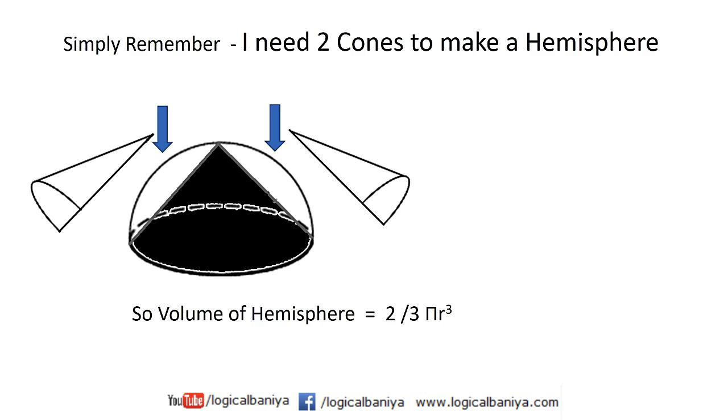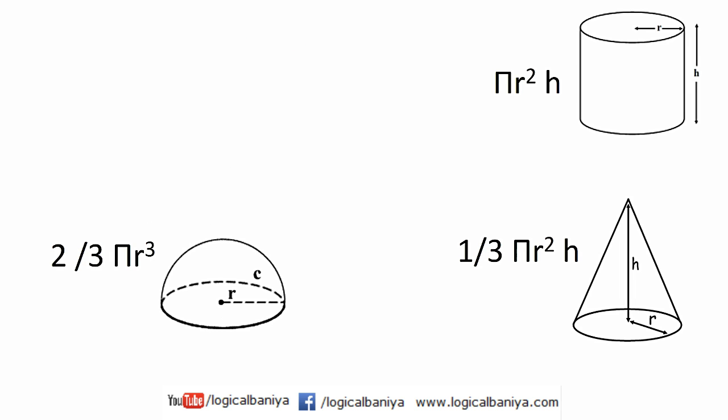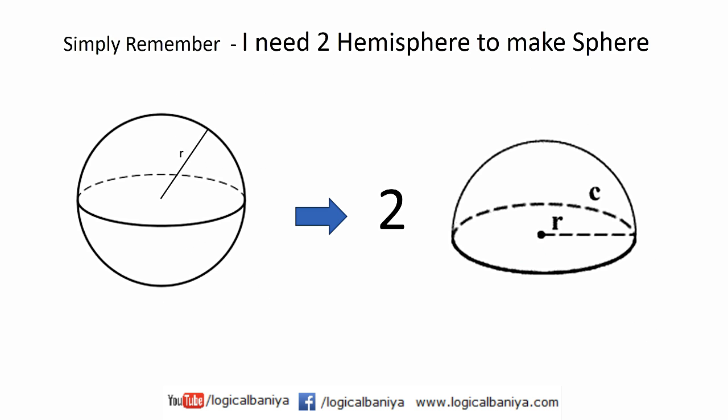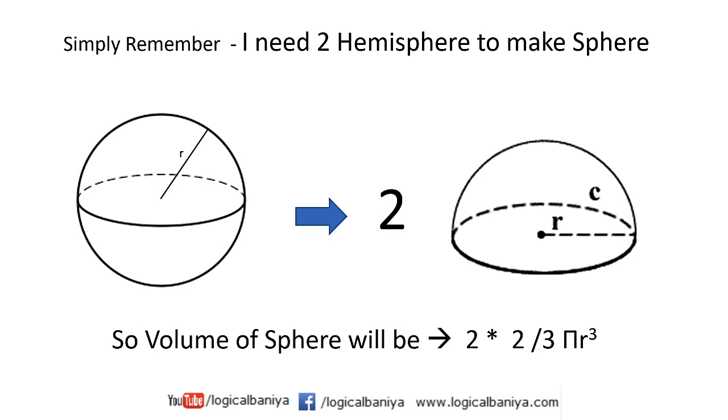We derived the formula of the cylinder, from the cylinder we derived the formula of the cone, and from the cone we derived the volume of the hemisphere. Now let's see the volume of the sphere. Simply remember: we need 2 hemispheres to make a sphere. So the volume of the sphere will be 2 into the volume of the hemisphere, which is 4/3 π r cube.